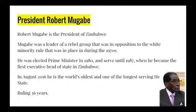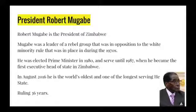The president is Robert Mugabe. He was a leader of a rebellion group, and what's kind of awesome — and kind of not at the same time — is he totally was in opposition to the white minority rule that was in place during that time. He was elected prime minister in 1980 and served until 1987, becoming the first executive head of state in Zimbabwe. Then, as of August 2016, he was the world's oldest and one of the longest-serving heads of state, having ruled for 36 years.